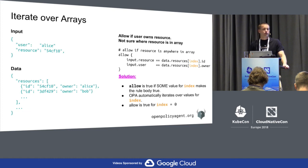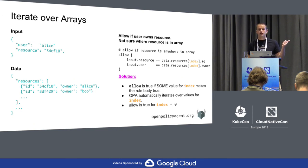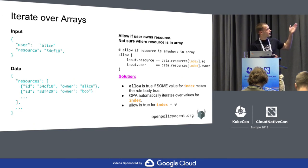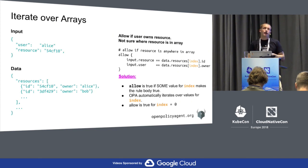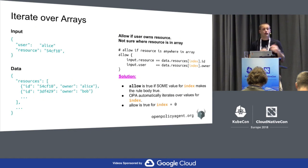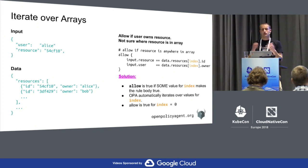How do you return data? When the service asks for a policy decision, it can ask for 'allow' — in which case it gets true or false. But you can also define virtual documents where the outside service asks for the value of that document, and it could be an array, a set, a dictionary, or a number.